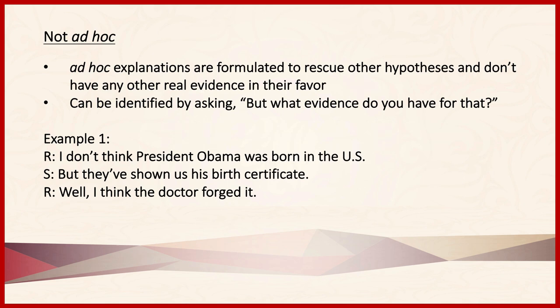Compare this to the following example. Suppose someone is discussing the Milankovitch cycles — various aspects of Earth's orbit — and how they explain how the Earth goes in and out of ice ages. An objector argues that Earth warms up much too quickly when coming out of ice ages for it to be due to the Milankovitch cycles. The defender responds that the extra warming is due to extra greenhouse gases released from areas where ice has retreated. This subsidiary hypothesis is not ad hoc — there is a lot of evidence to support it, and so it strengthens the original hypothesis.